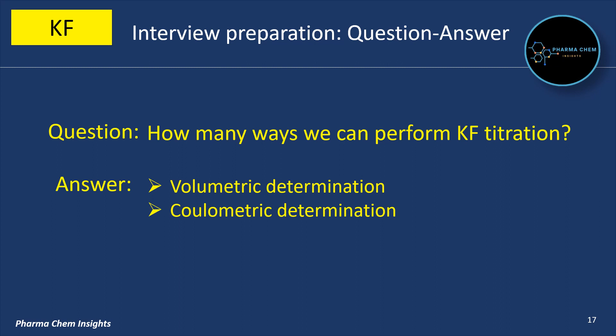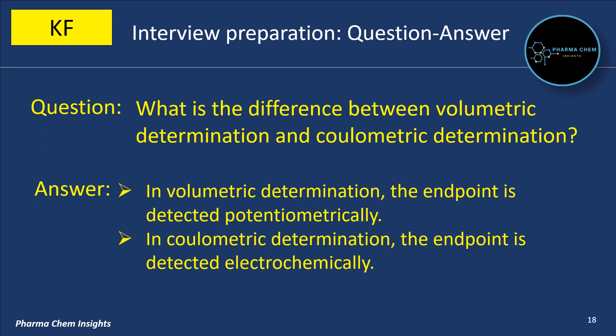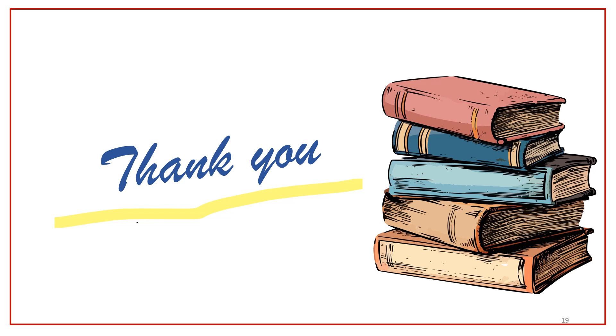How many ways can we perform KF titration? We can perform KF titration in two ways: volumetric determination and coulometric determination. What is the difference between them? In volumetric determination, the endpoint is detected potentiometrically. In coulometric determination, the endpoint is detected electrochemically.